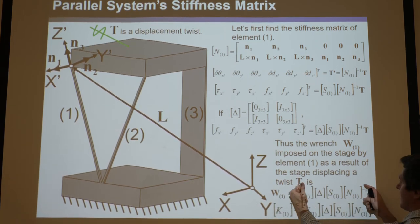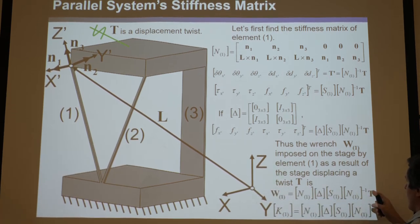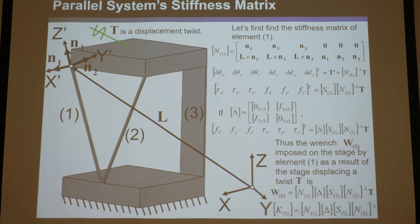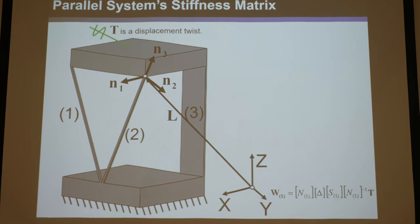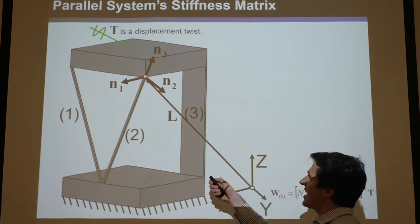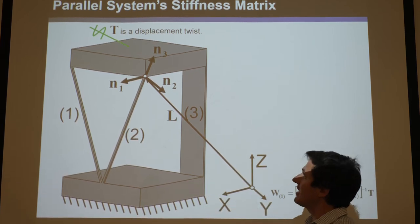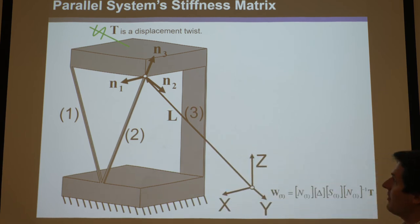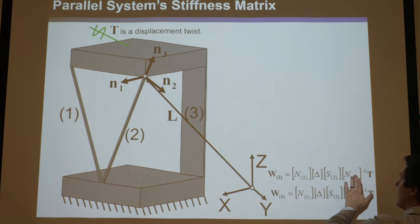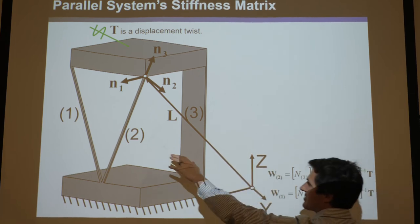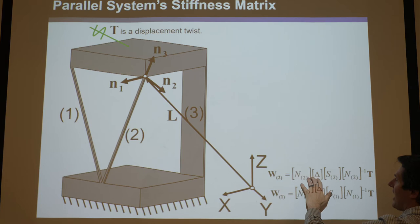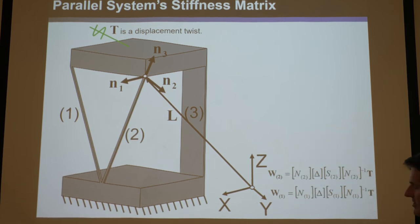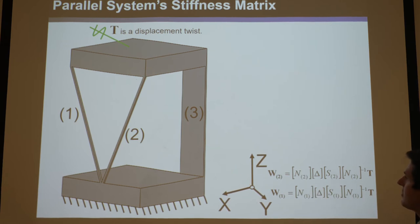Basically, the stiffness matrix of element 1 is the full expression, because you have f = kx, where x is the twist, f is the wrench, and k is this combined expression. You have a twist-wrench stiffness matrix relating twists to wrenches for element 1. For element 2, you do the same thing: draw a new L vector pointing to where it attaches to the stage, orient n3 going into the stage, orient n1 and n2 perpendicular to their faces following the right-hand rule, and repeat.